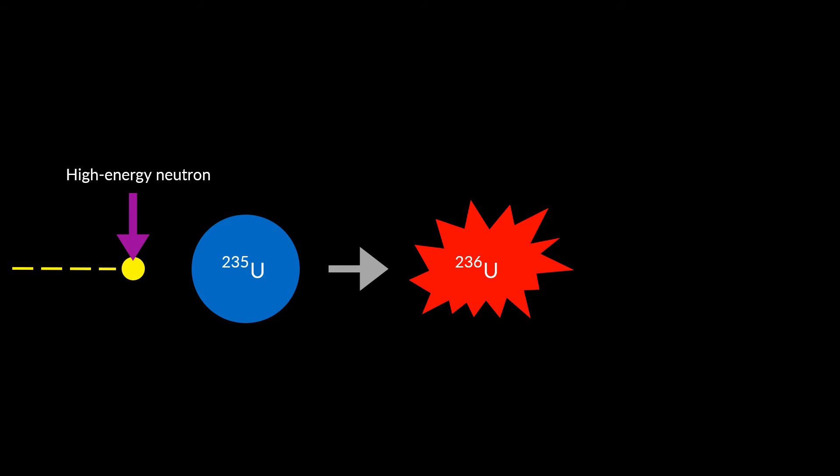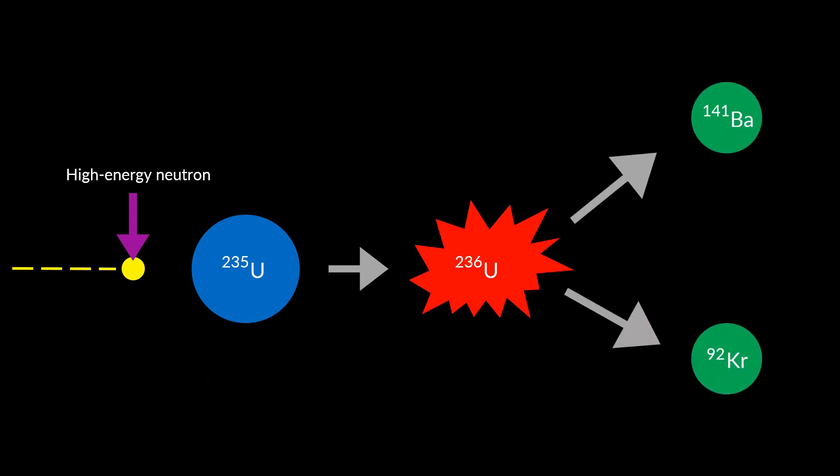Uranium-236 is very unstable compared to Uranium-235. Thus, it undergoes fission. Uranium-236 splits into two atoms, Krypton and Barium. The atomic masses of the two are 92 and 141, that is Krypton-92 and Barium-141.